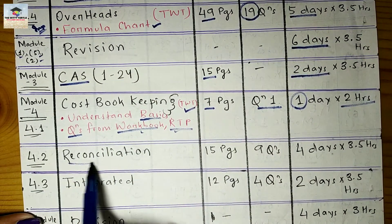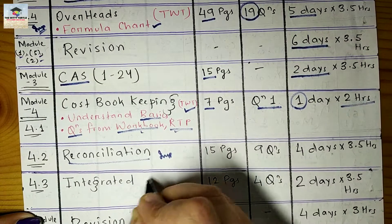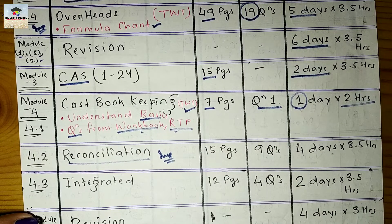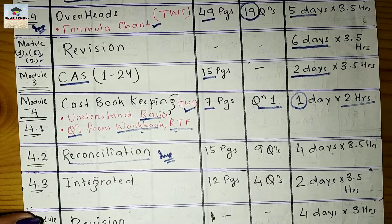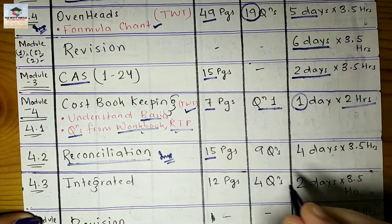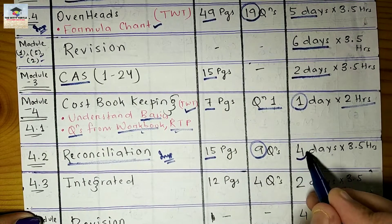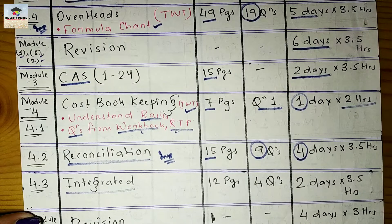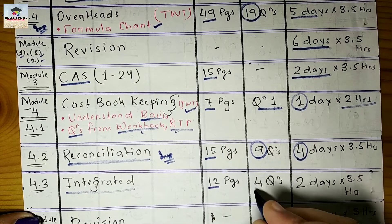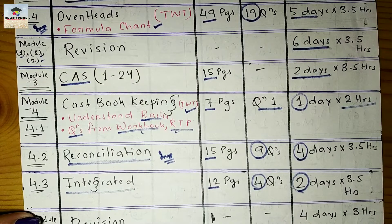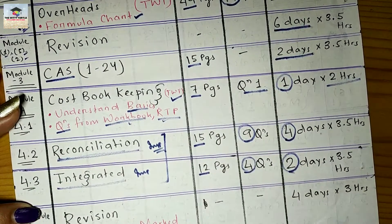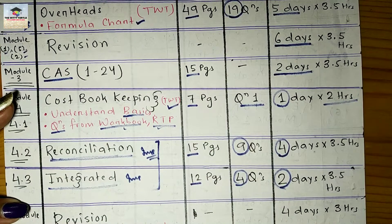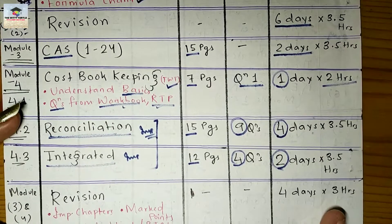The next sub-module is Reconciliation — an important chapter because you get questions from it every year, especially since online exams started featuring Section D case study questions from this chapter. It has 15 pages and 9 questions, taking four days. Then Integrated Costing System has 12 pages and 4 questions, taking two days. Unfortunately I don't have classes for these two chapters on my channel — I'll update you via Instagram or YouTube community posts on where to find them.